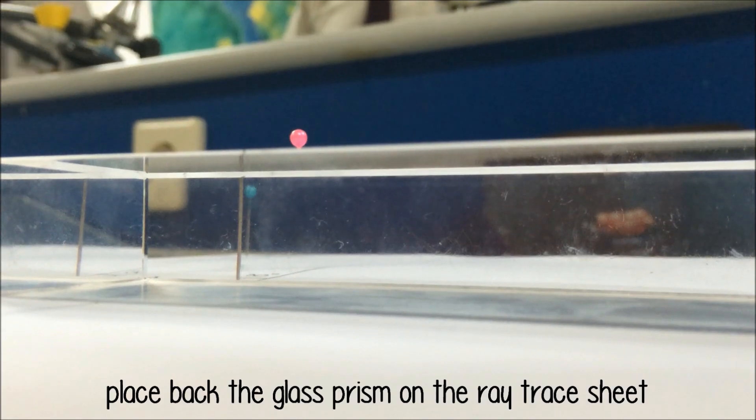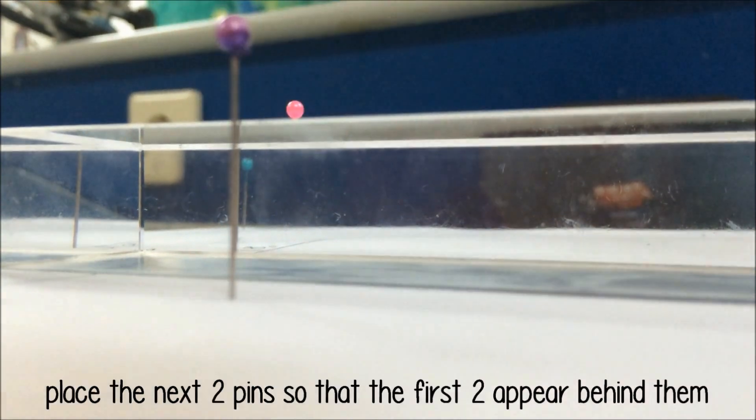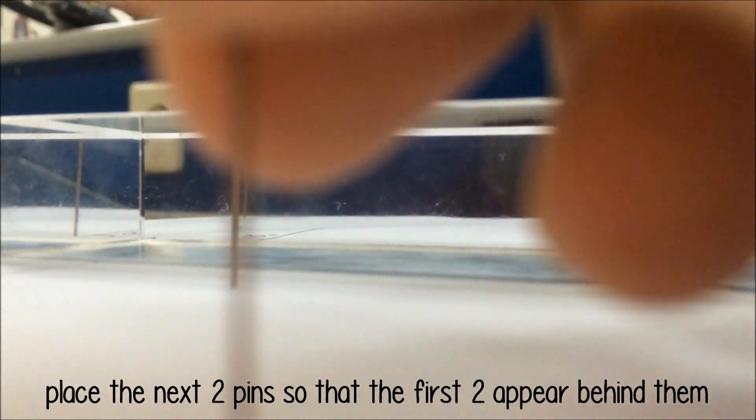Step 7: Place the glass prism back onto the ray trace sheet and take the next two pins and try to align them so that they look exactly behind the first two pins.